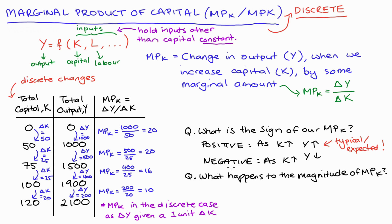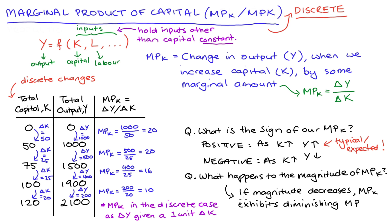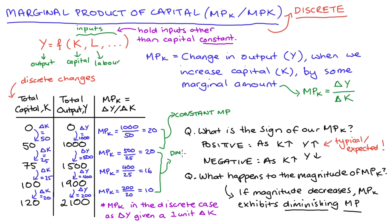The second question is what's happening to the magnitude of our marginal product. In the expected case where MPK is positive, we check whether those magnitudes are getting smaller and smaller — this is called diminishing marginal product. In our example, initially the marginal product was constant at 20 and 20, but then it fell to 16 and then to 10. This reduction in the magnitude of our marginal product is diminishing marginal product, and it's quite important in many economic models, so it's good to know how to identify it.